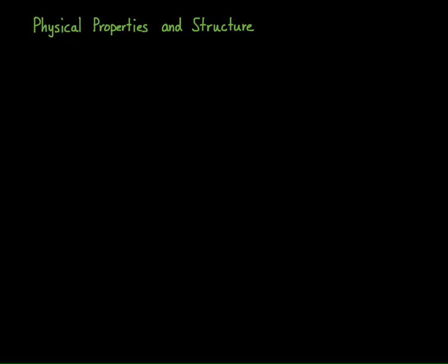Before we get into the reactions of acyl compounds, we have to think about the physical properties and the structure of them and see how they actually relate to the reactivity. The first thing we have to understand is that acyl compounds are polar. Because of this polarity, they certainly have dipoles. We've seen the dipole of a carbon-oxygen double bond before with carboxylic acids and with ketones and aldehydes, so we're going to see some similarities between carbonyl compounds and acyl compounds.